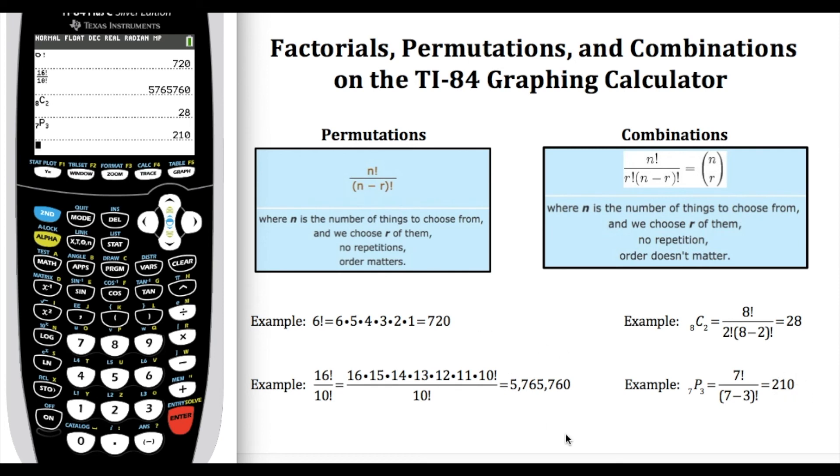Just a real quick few examples here to show you where that factorial button is, where the permutation is, and where the combination is and how you would use those on your TI-84 graphing calculator. Thanks for watching, don't forget to subscribe to the channel. Thanks!